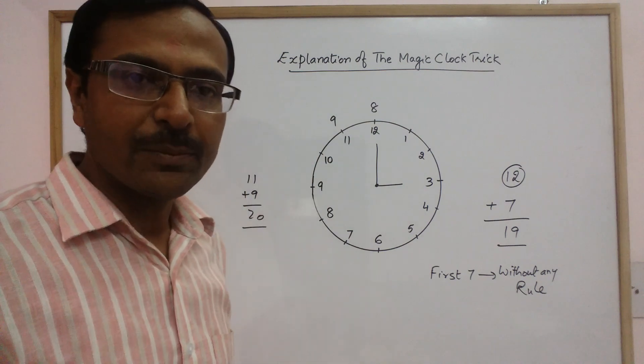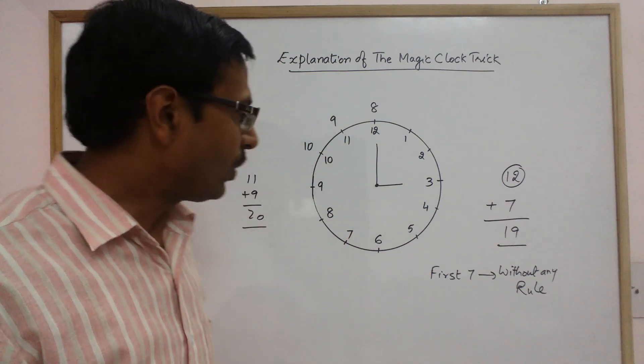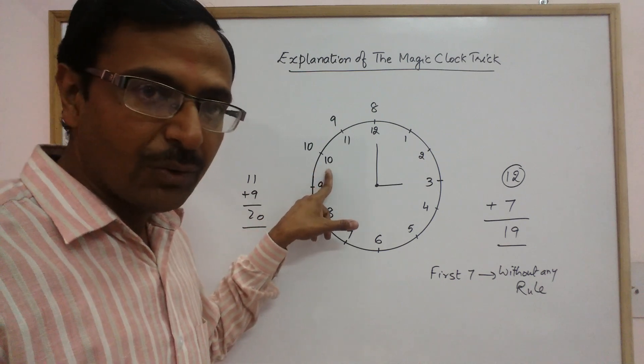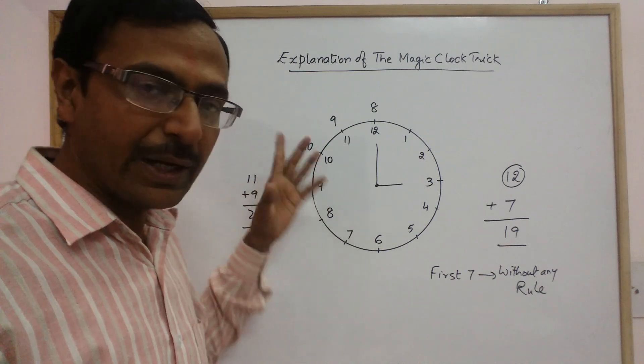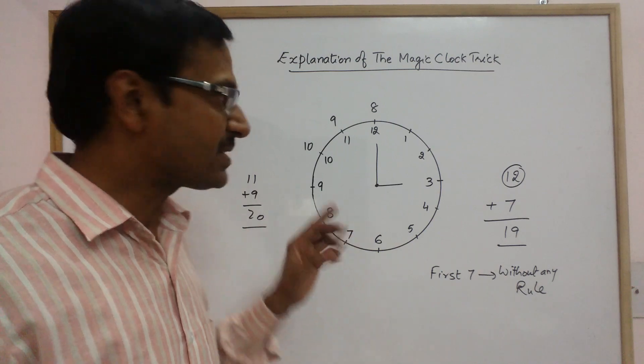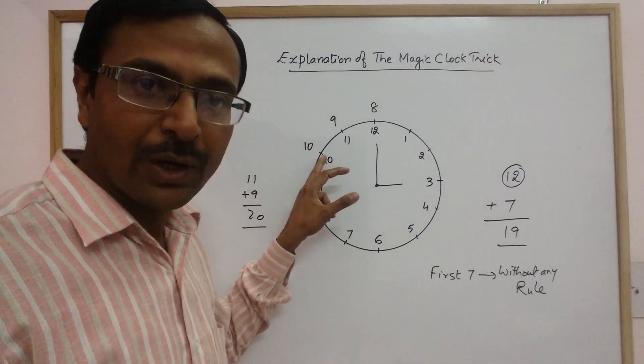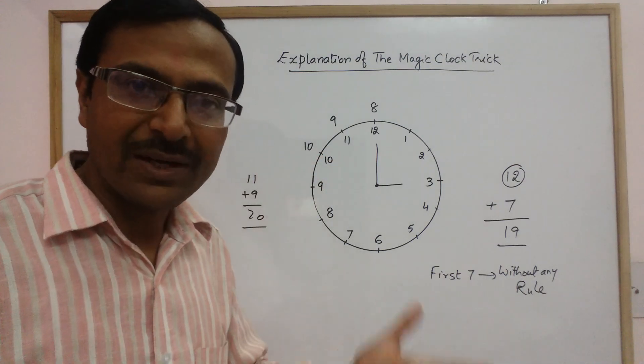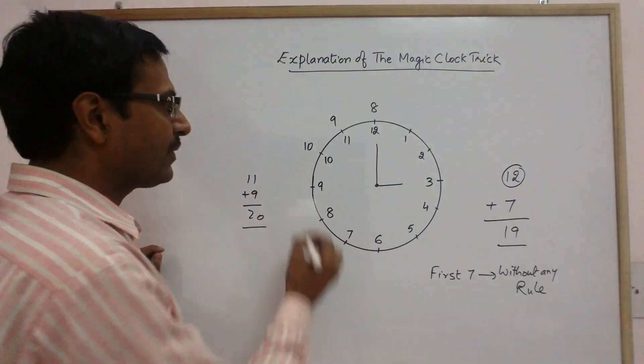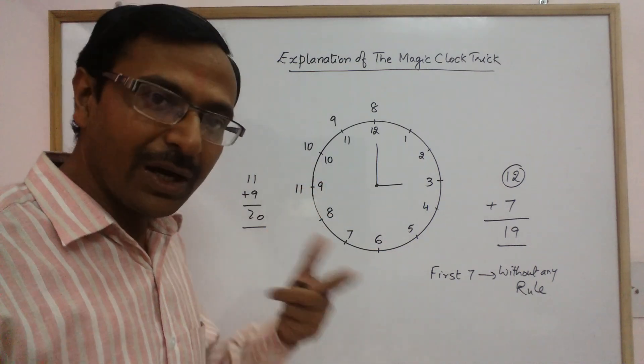Simultaneously, now you can see all other numbers. So the tenth one which you keep, you always keep it on ten. Why? Because ten plus ten is twenty. So if he has thought ten in his mind, then ten plus ten automatically will be twenty and at that time he will stop you and you will be at that number itself. Now you go anticlockwise, keep your eleventh here. So eleven plus nine will become again twenty.